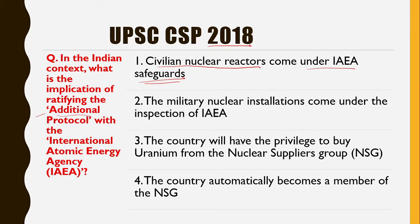One useful tip for UPSC prelims: in examination questions, they often give extreme terms like 'automatically,' 'enormously,' or 'absolutely.' Usually, these absolute or extreme terms indicate wrong statements, so you can eliminate those options accordingly.